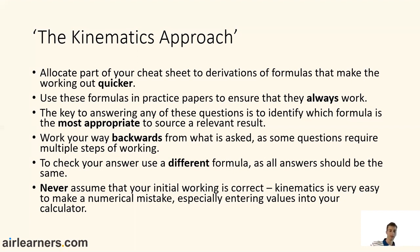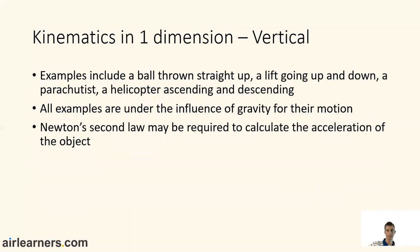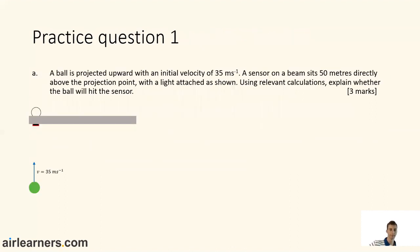With regards to those cheat formulas, if you'd like an example of those, you can contact me via the Air Learners website and I should be able to provide you with the derivation and some examples of how some of those formulas work. Okay, now a bit of content. Kinematics in one dimension, we'll start with the vertical. Examples can include throwing a ball up and down, a lift going up and down, a parachutist obviously going down, a helicopter going up and down. And all these examples are under the influence of gravity for their motion. So with that, you'll sometimes get a lifting force - for instance, the helicopter blades lifting the helicopter up, or the cable in a lift lifting it up. But you'll also have the influence of gravity in this situation. So you may require Newton's second law to get the acceleration of the object.